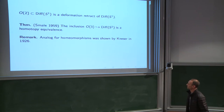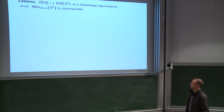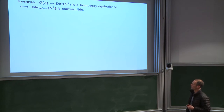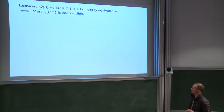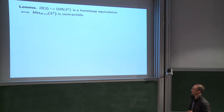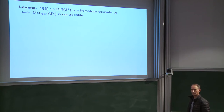I want to give a proof of Smale's theorem that's different from Smale's proof. I want to present this argument because it will motivate what I do later in the talk and give some idea of the flavor of the arguments people have used in this area. The first step is this reduction: showing that the assertion that O(3) ↪ Diff is a homotopy equivalence is equivalent to showing that the space of curvature-1 metrics on the 2-sphere is contractible.